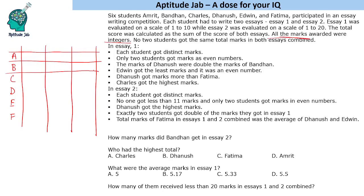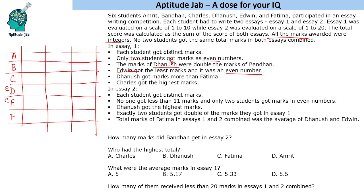Only two students got marks as even numbers. The marks of Dhanush were double the marks of Bandhan, so Dhanush must be even because double of any number is always even. Edwin got the least marks and it was an even number. So Dhanush and Edwin got even numbers, meaning the remaining four have to get odd numbers.